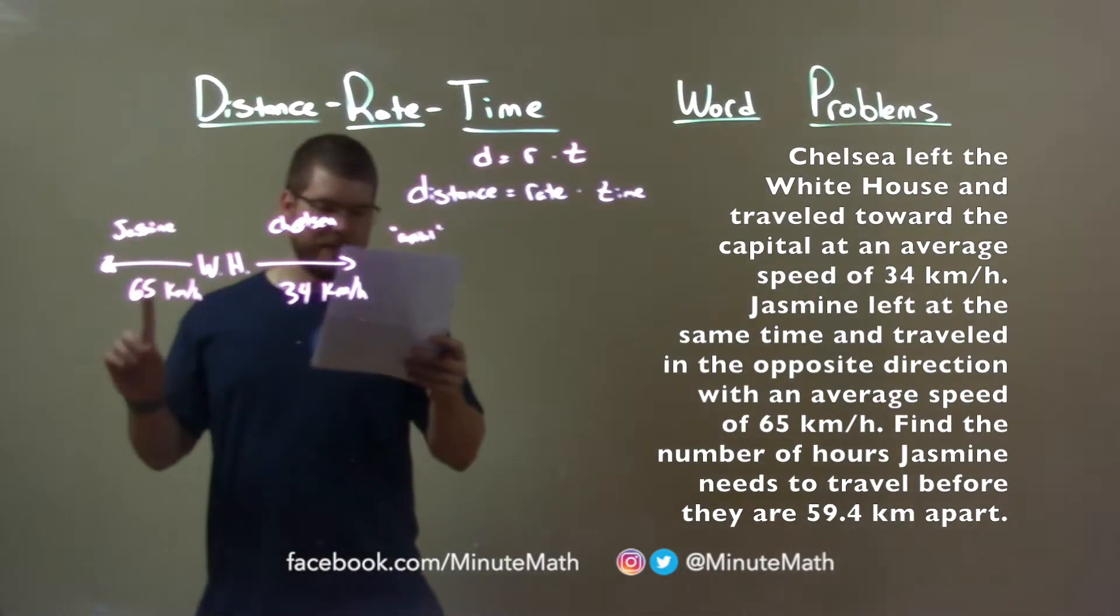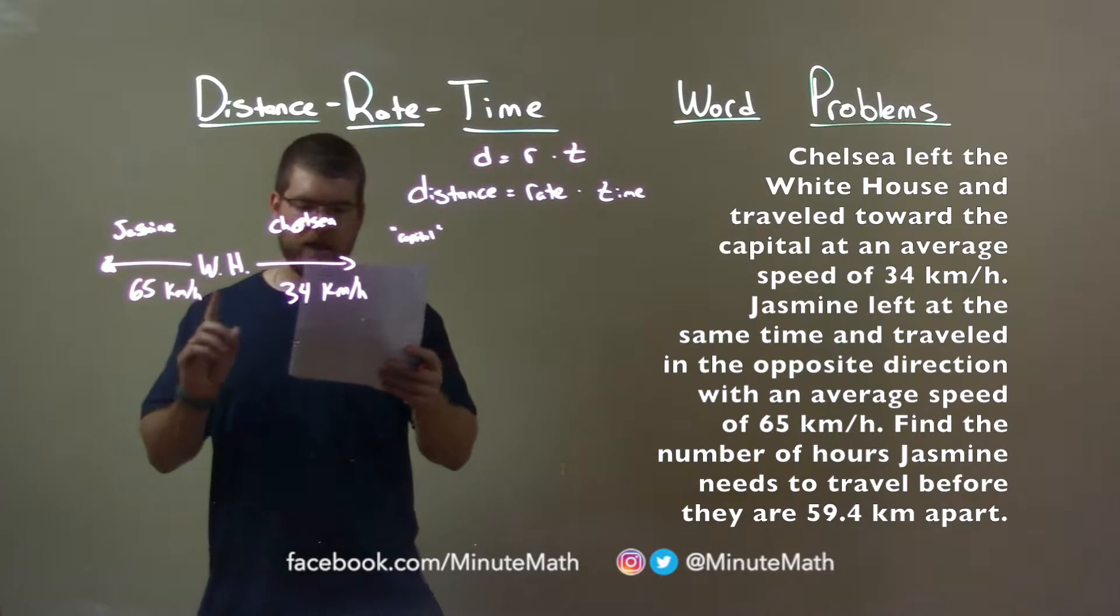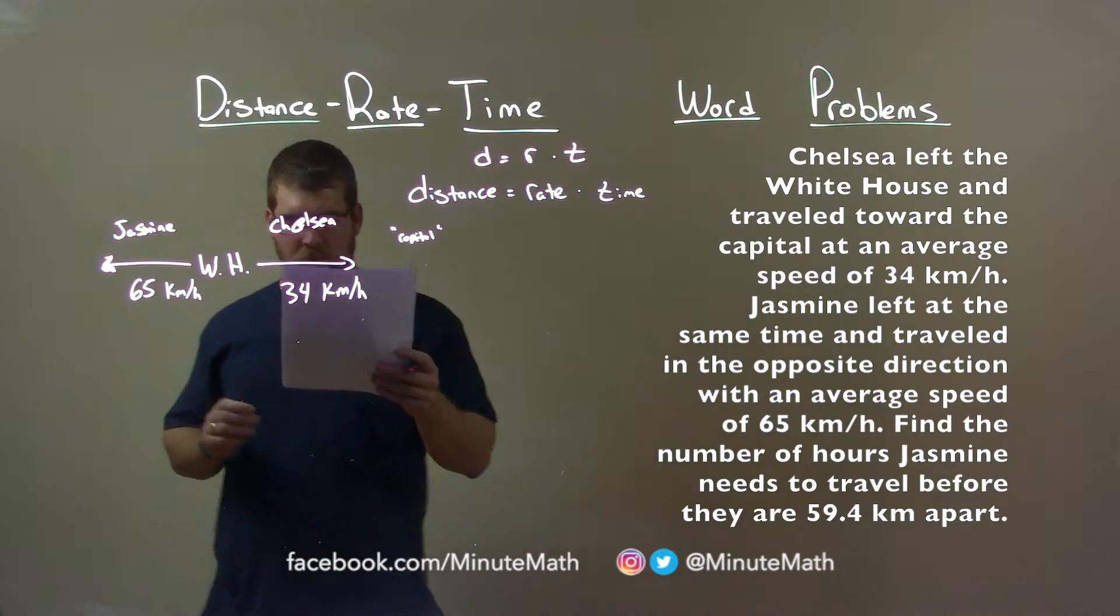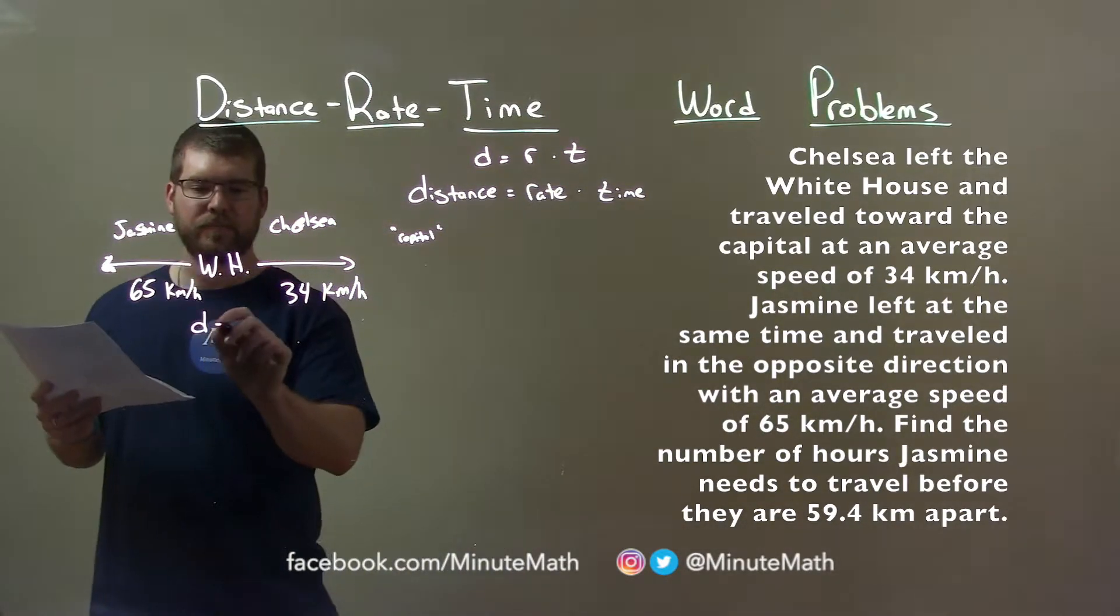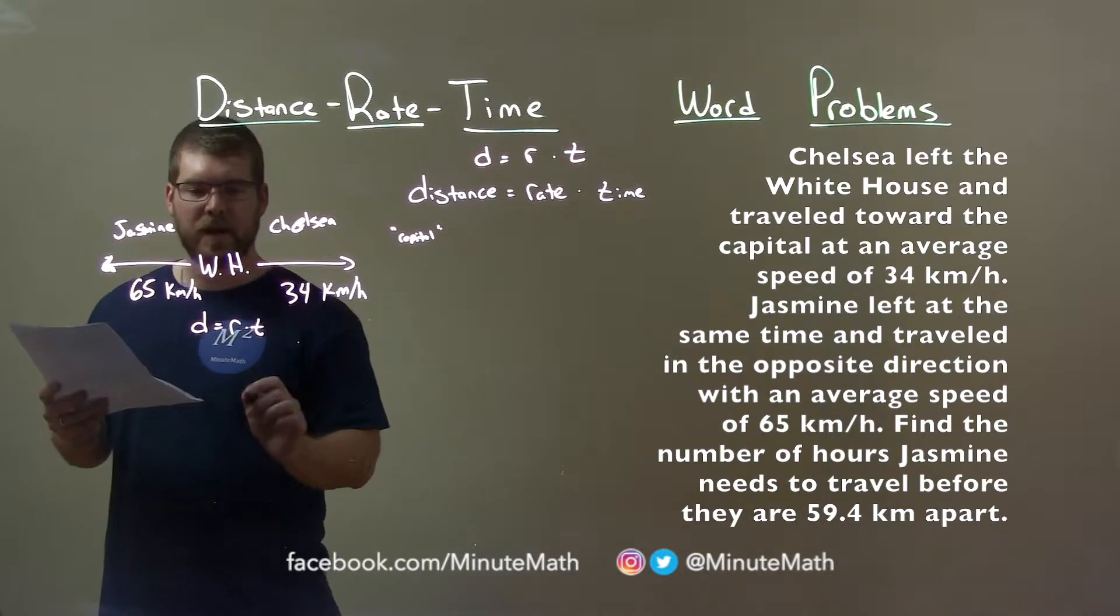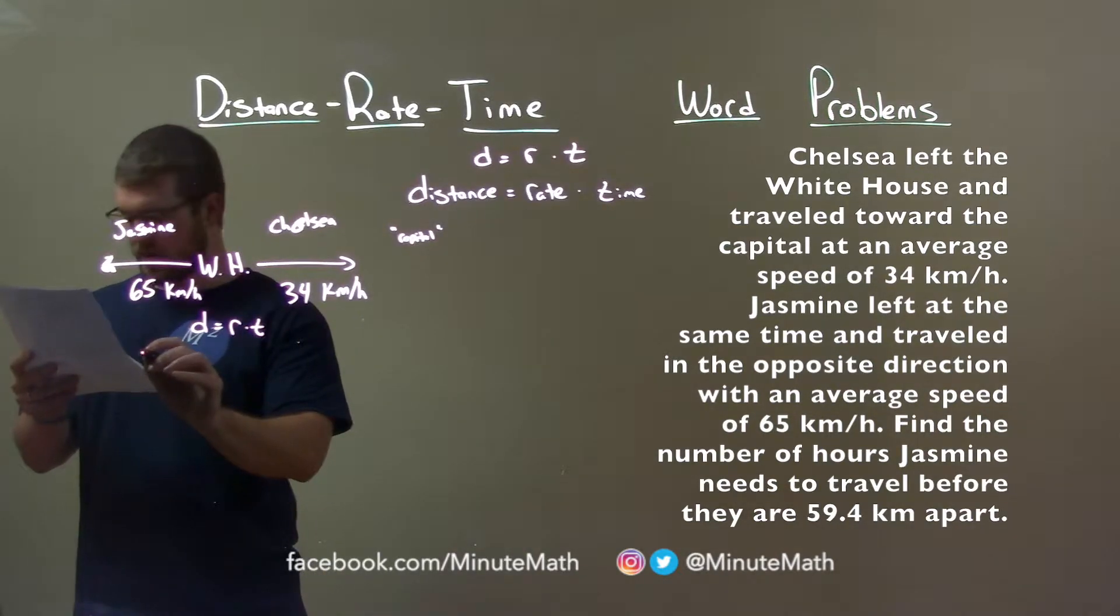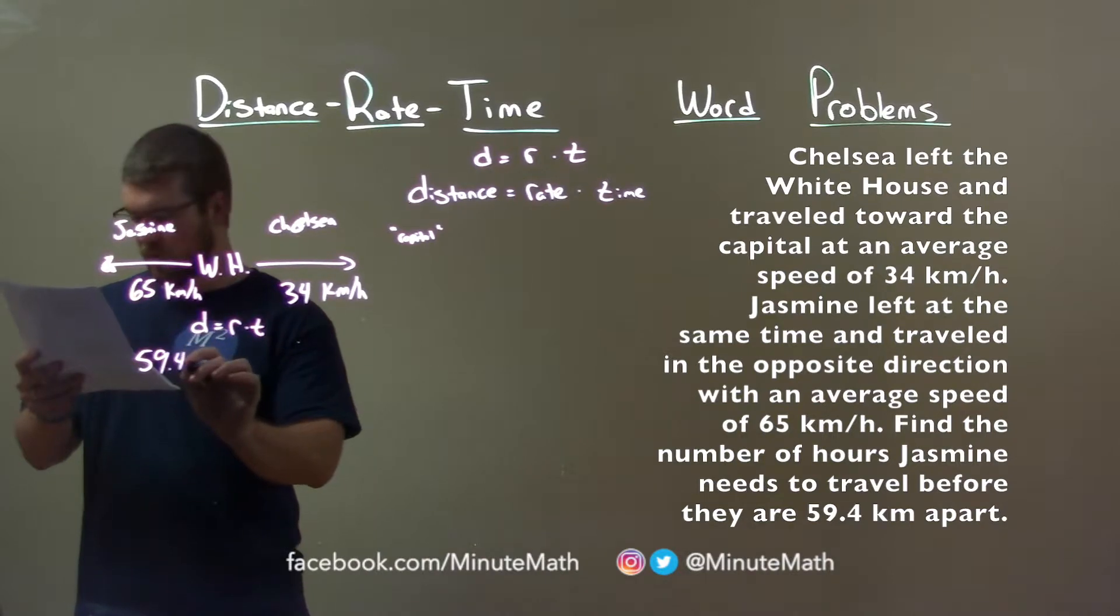So we're going to see how many hours they need to travel before they are 59.4 km apart. Our distance is our rate times our time. Our distance we're trying to find is 59.4 km. And here's the tricky part.